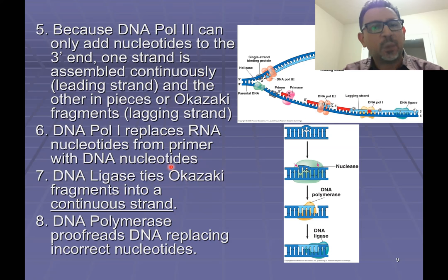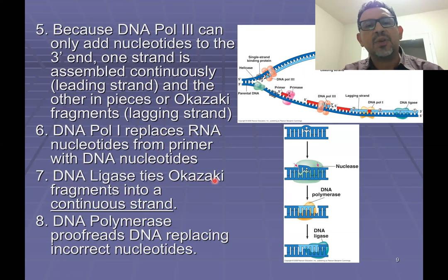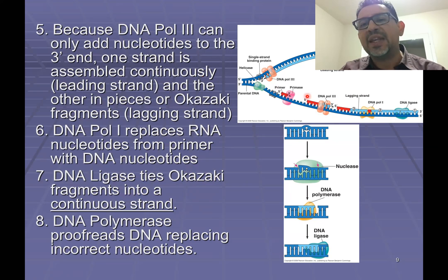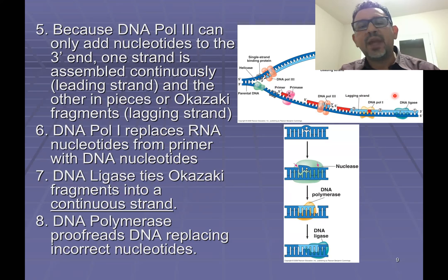The short pieces of DNA that are being assembled in the lagging strand have a name, and these are known as Okazaki fragments. This is a name you want to pay attention to and remember. Okazaki fragments are named in honor of their discoverer — Dr. Okazaki, a Japanese geneticist — who was the one that first noticed that on the lagging strand of DNA, synthesis was being done piece by piece, little by little, and that fragments of DNA would eventually be joined together.